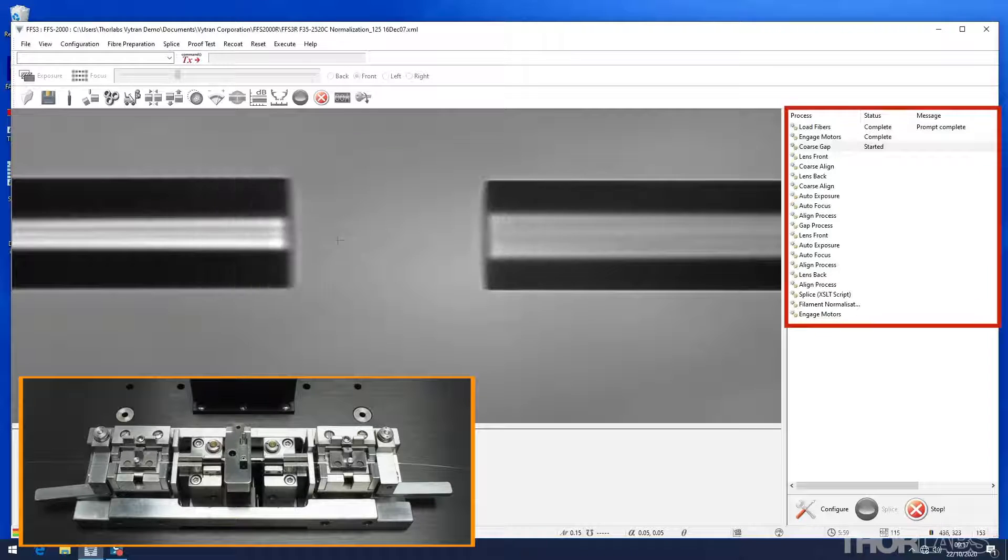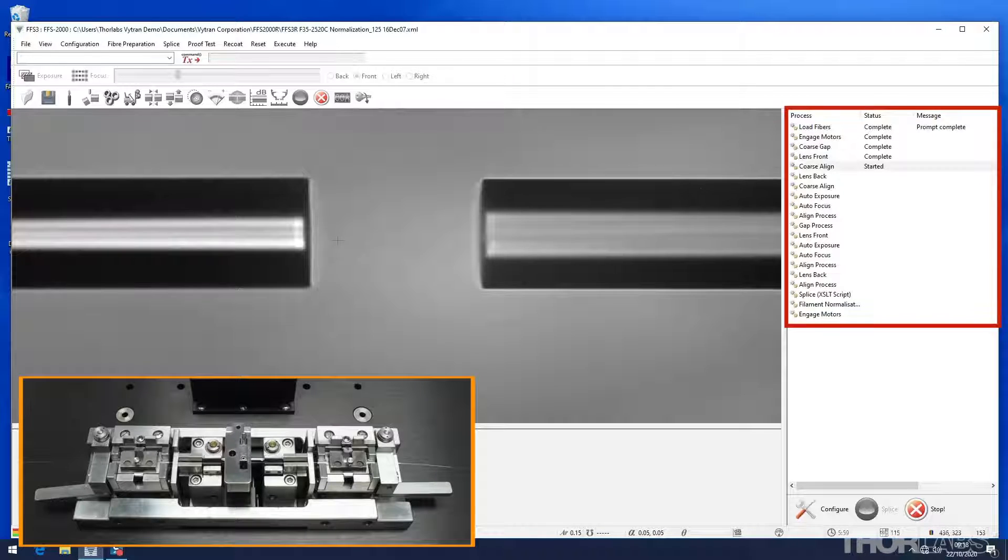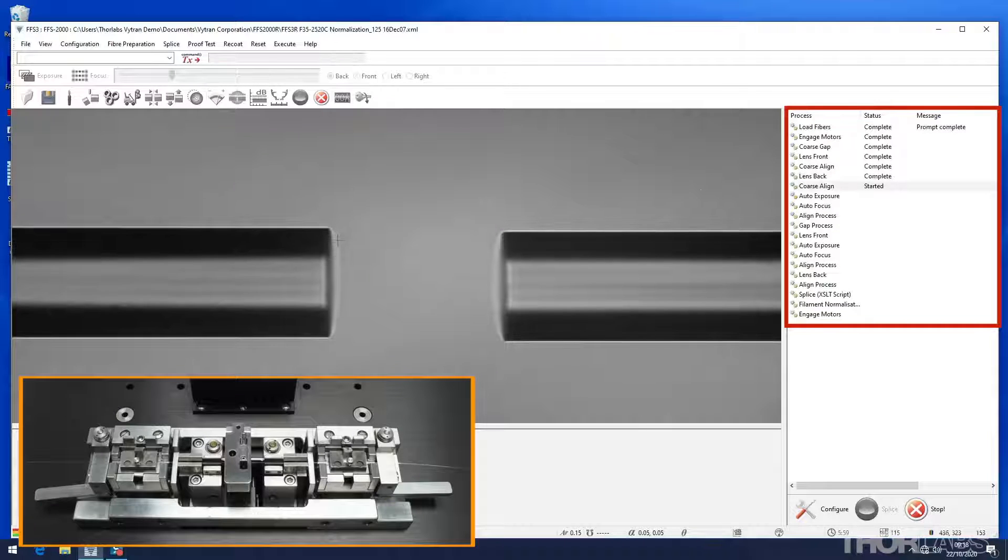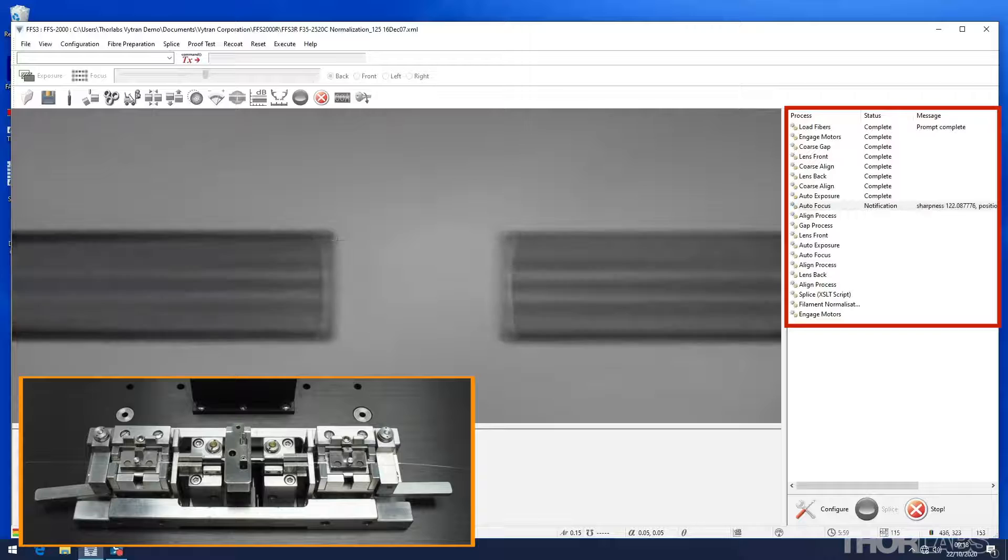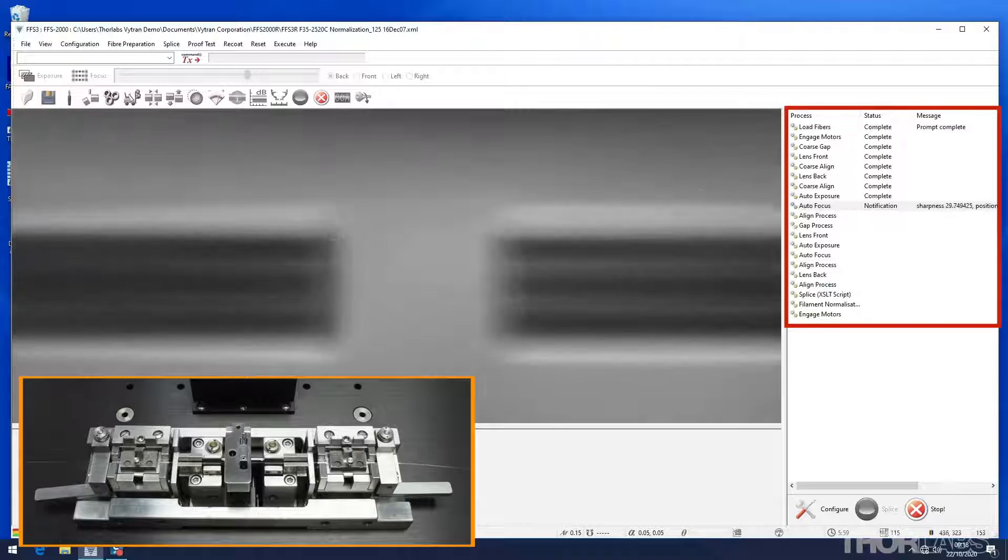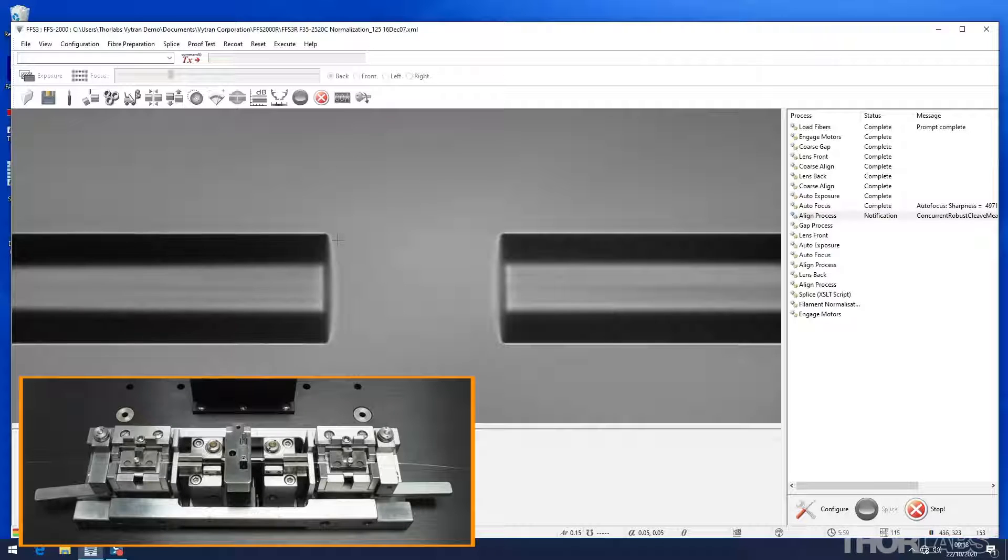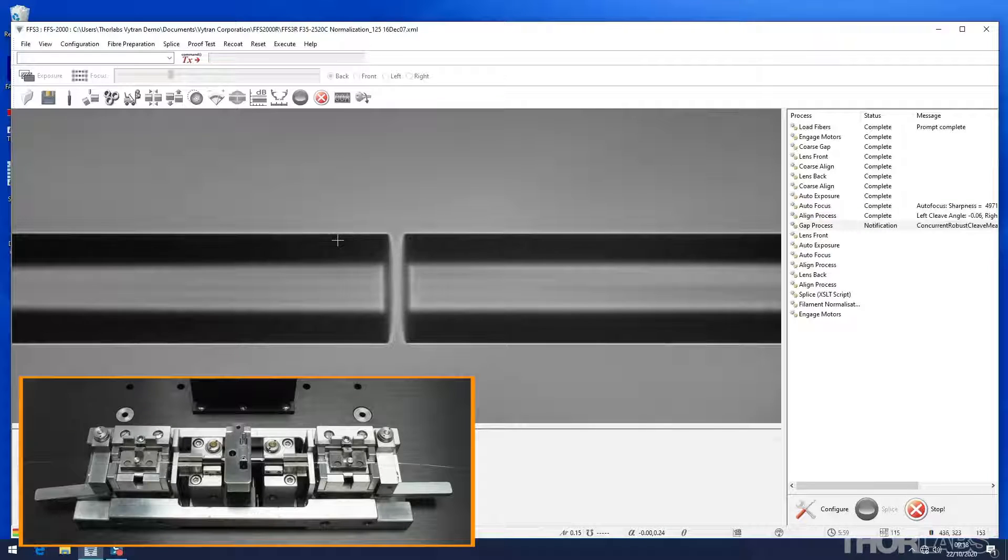Once the fibers are loaded, the normalization process will first gap and align the fibers. It is normal for the image to go dark when switching between the front and back views.